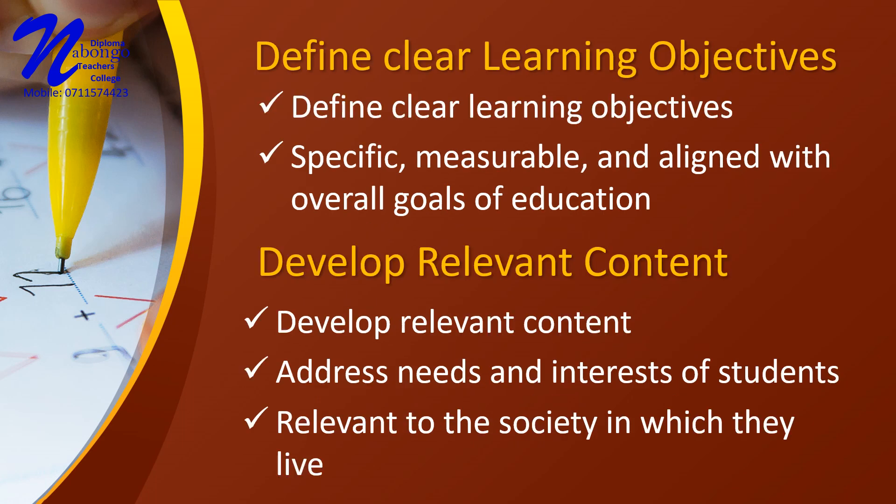Number 1: Define clear learning objectives. Identify the key learning objectives that students should achieve through the curriculum. These objectives should be specific, measurable, and aligned with the overall goals of education. Number 2: Develop relevant content. Develop content that is relevant to the needs and interests of the students, as well as to the society in which they live. The content should be current, accurate, and presented in a way that is accessible to students of all abilities.